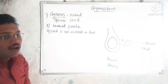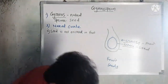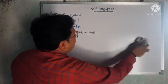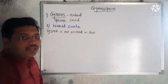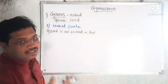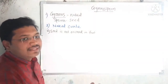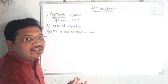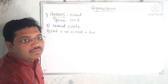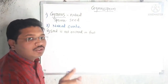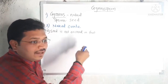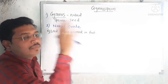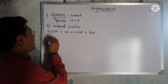Gymnosperm is one of the members of kingdom Plantae. In kingdom Plantae, there are Thallophyta, Bryophyta, Pteridophyta, Gymnosperms, and Angiosperms. So gymnosperm is one group within kingdom Plantae. The next characteristic of gymnosperms is that they have a sporophytic plant body.